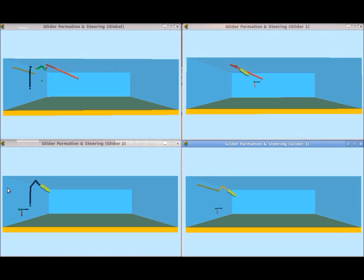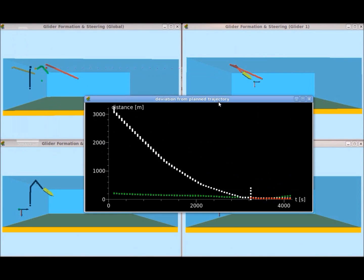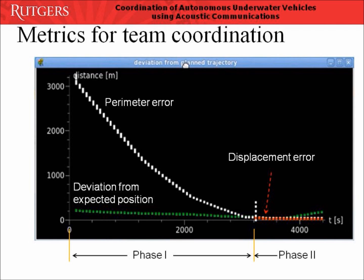The remaining visualization windows visualize the movement of each glider. These windows can all be maximized and rotated in 3D. Next, let's show the performance metric plot. For phase 1, we have two metrics. Perimeter error, which is plotted in white — it is the difference between the actual formation perimeter and the expected formation perimeter. The second metric, plotted in green, is the distance of the actual team's centroid to its expected team's centroid. As shown in this plot, our team formation algorithm is effective in reducing these two metrics.